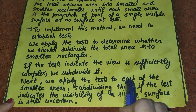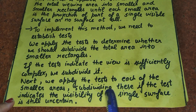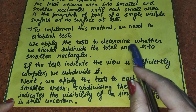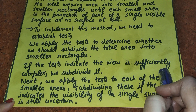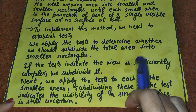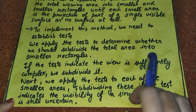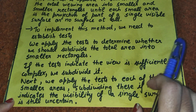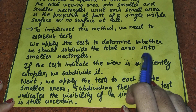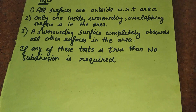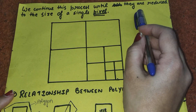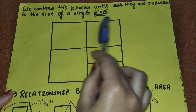We then apply the test to each of the smaller areas, subdividing further if the test indicates the visibility of a single surface is still uncertain. If, after dividing once, the complexity does not decrease, we further subdivide that area. We continue this process until we achieve the size of a single pixel.